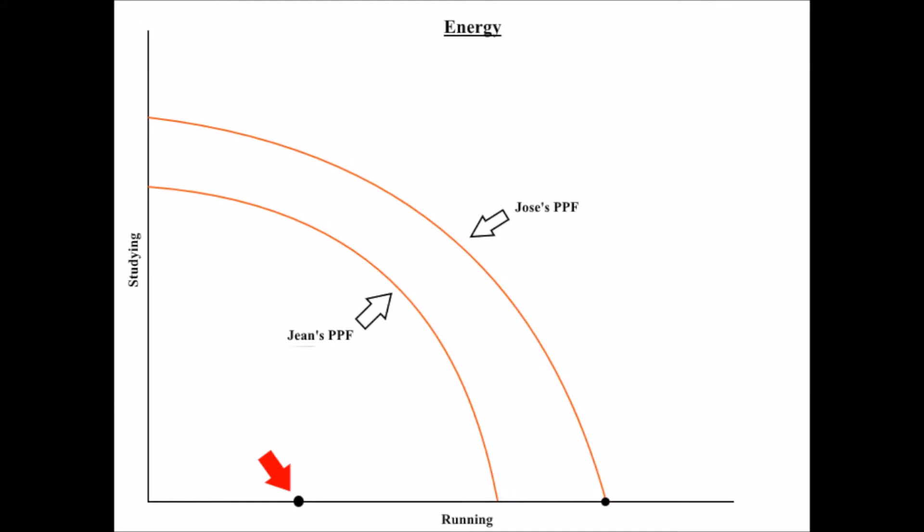When you use the rest of your unused resources to achieve maximum efficiency, you will gain what is known as a free lunch. You will have gained a free lunch because you did not have to give up energy that you were previously using to, let's say, study microeconomics. Those resources simply weren't being utilized. Now, go get your free lunch and outrun Jose.